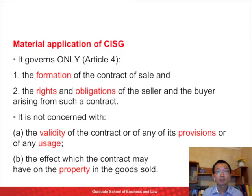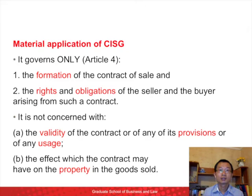In Section B, property means something to which a person or business has a legal title. It refers to ownership — the exclusive right to possess, enjoy, and dispose of something. In some legal systems, property or ownership passes at the time when the contract is concluded. In some other legal systems, property passes at some later time — for example, at the time when the goods are delivered to the buyer.